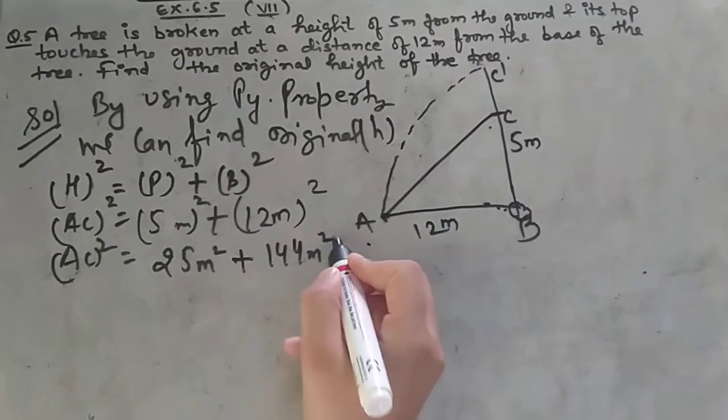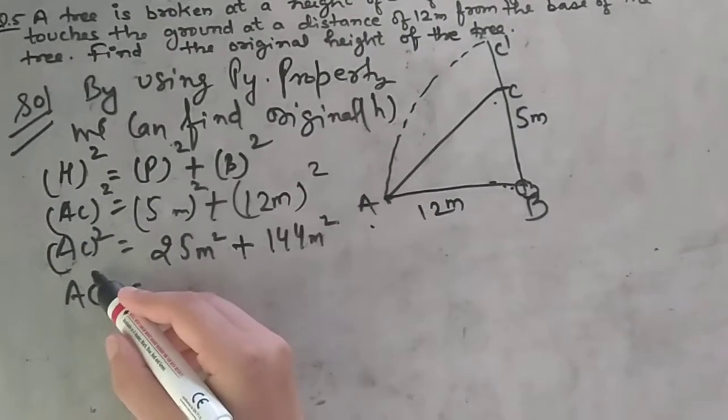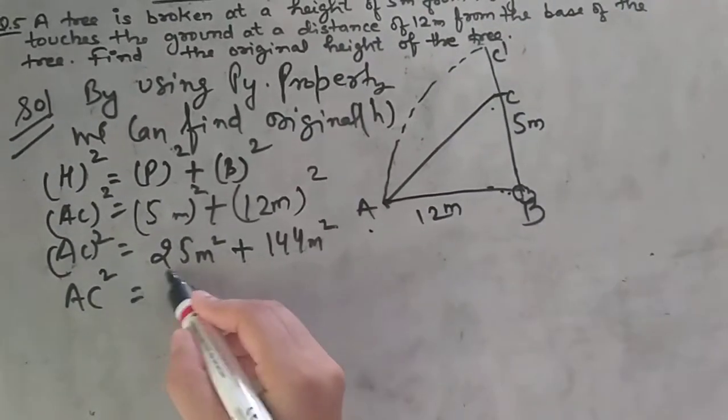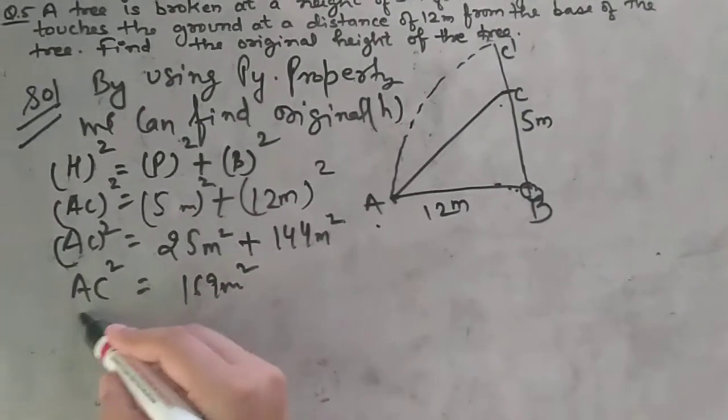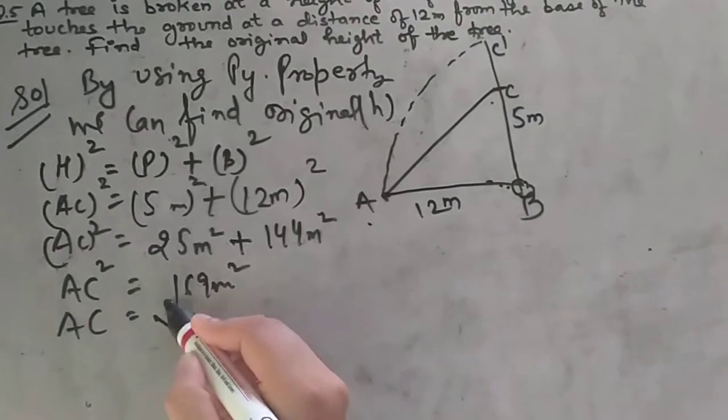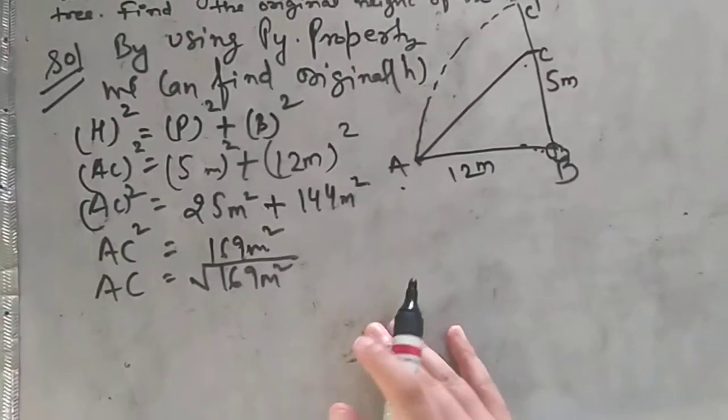25 plus 144 meters squared. When we sum them, we get 169 meters squared. So AC equals the square root of 169, which is 13. AC equals 13 meters.